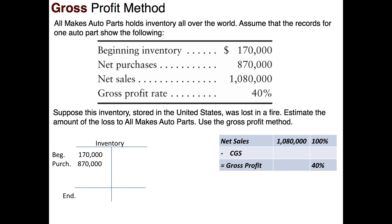These three lines on your income statement can be represented as a percent of sales. Net sales is 100% of itself. They tell us the gross profit rate is 40%, meaning gross profit is 40% of net sales. That means cost of goods sold must be 60% of net sales.